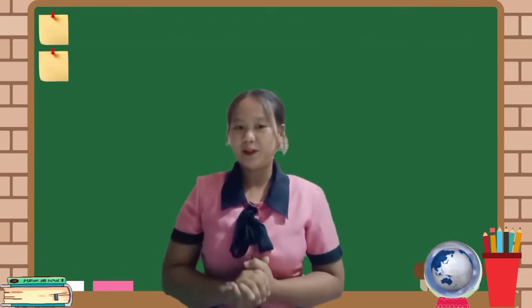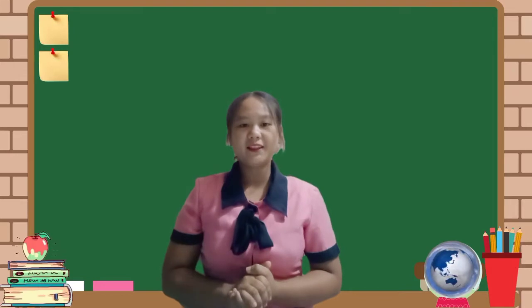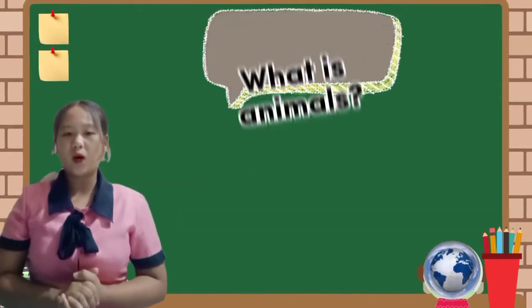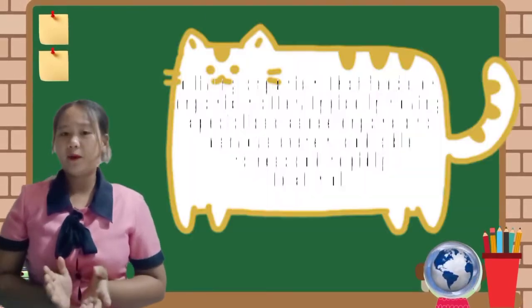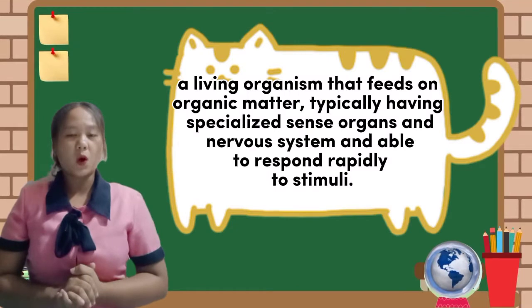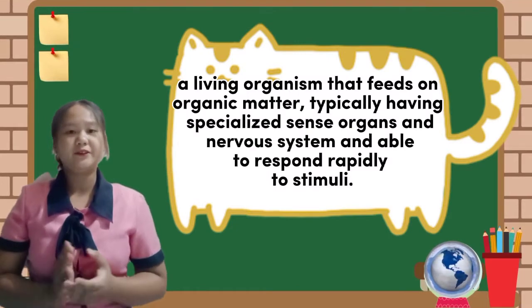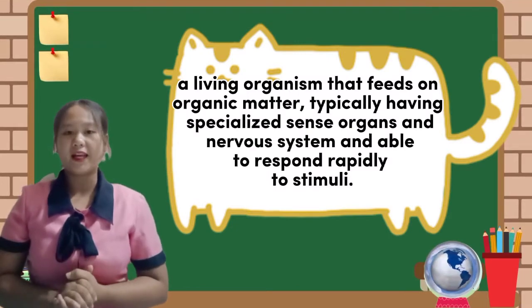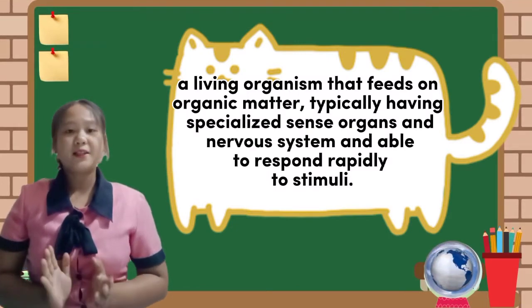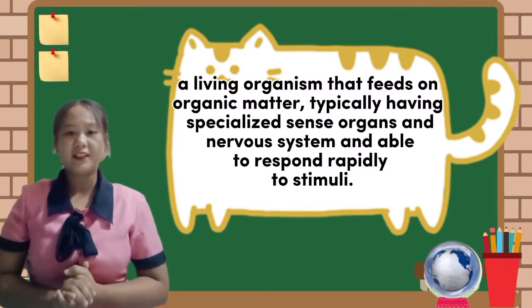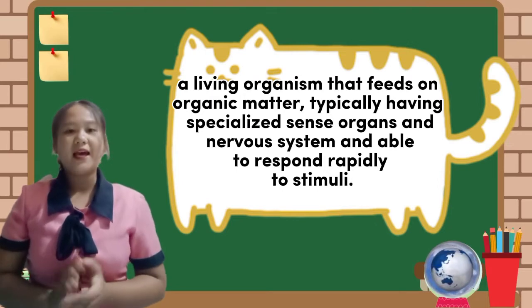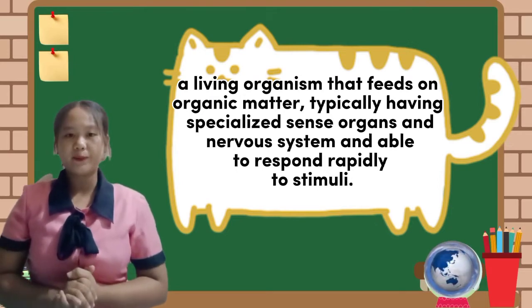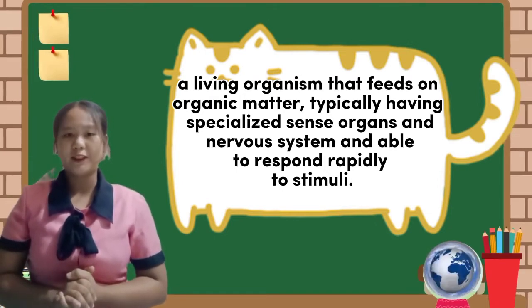Before anything else, let's first define what animals are. Animals are living organisms that feed on organic matter, typically having specialized sense organs and a nervous system, and are able to respond rapidly to stimuli.